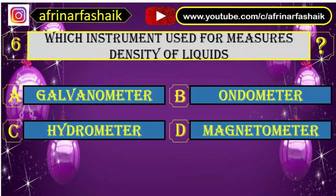Question number six: which instrument is used to measure the density of liquids? Your options are A. Galvanometer, B. Anemometer, C. Hydrometer, and D. Magnetometer. C. Hydrometer is the right answer.